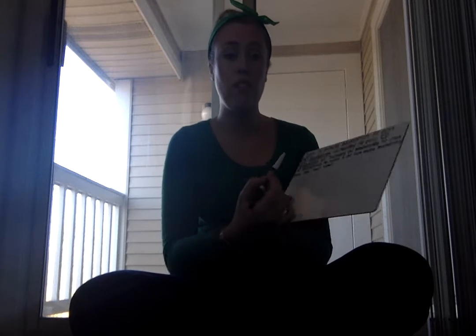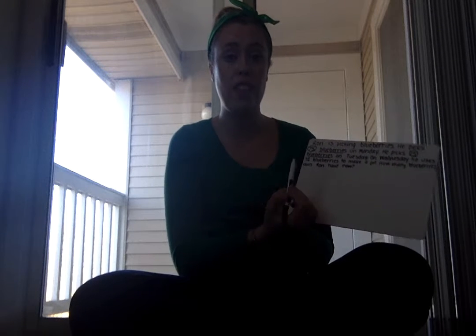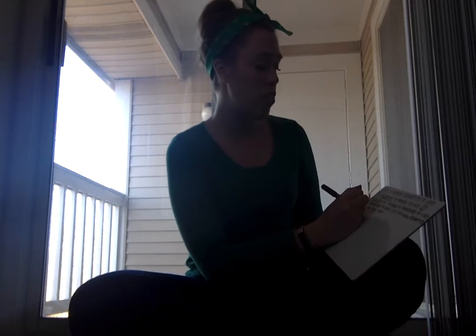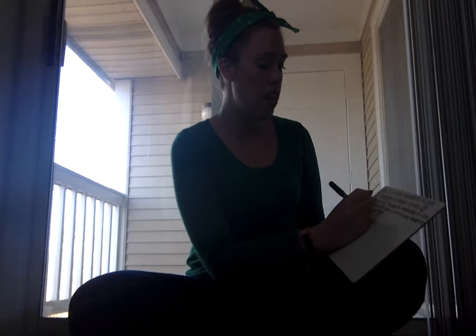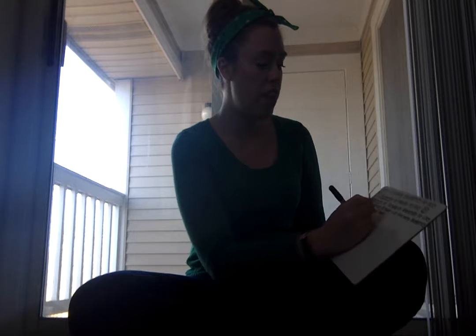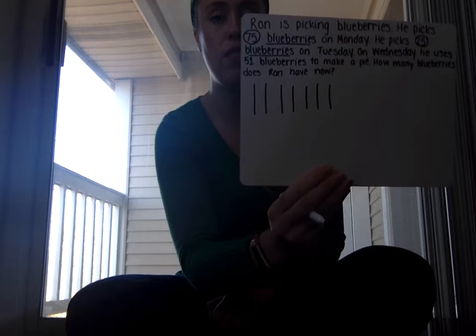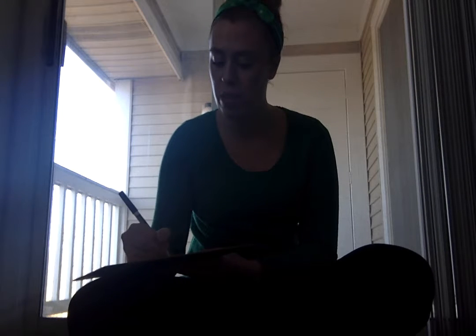The first way I want to solve this is by drawing place value blocks. I'm going to draw the 75 blueberries he started with using base ten blocks — seven tens, which are seven rods, and then five ones.